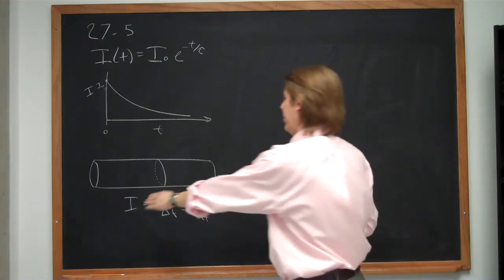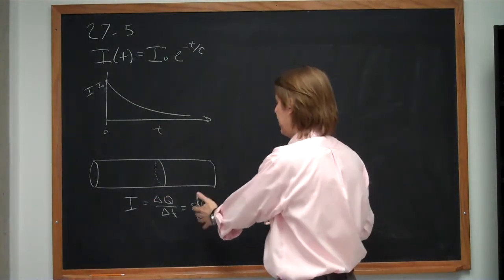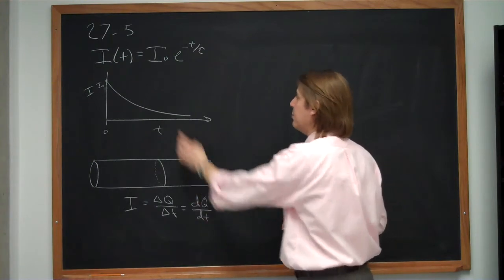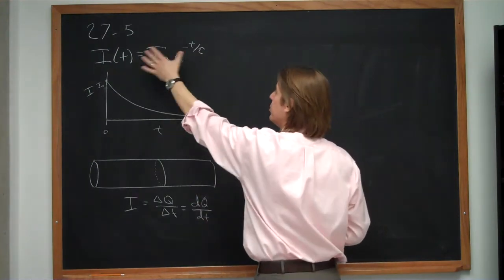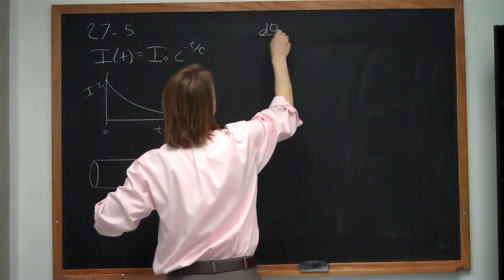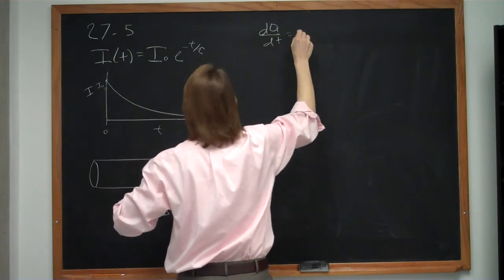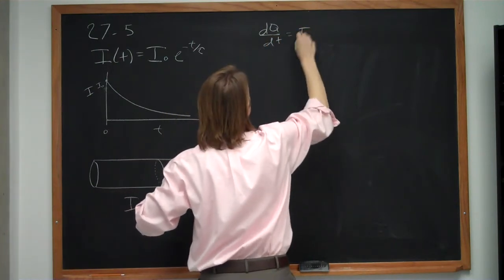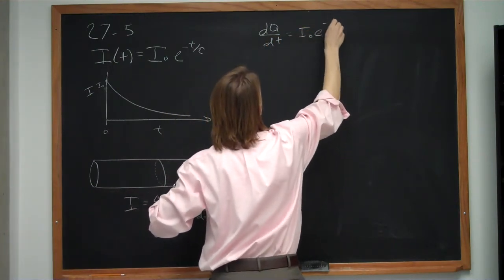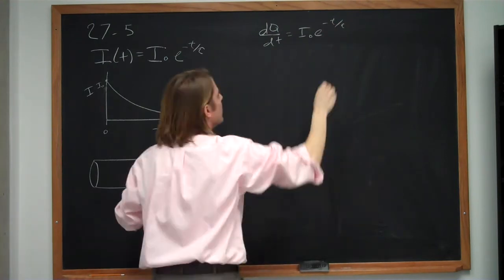So if the current is dq/dt, then dq/dt must equal this expression: dq/dt = I₀ e^(-t/τ).